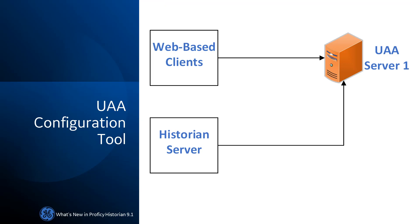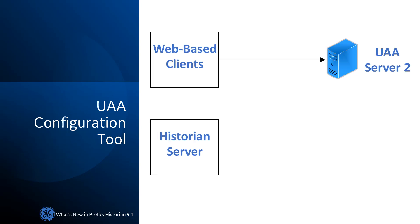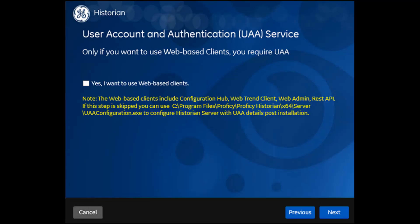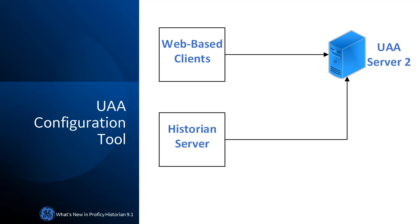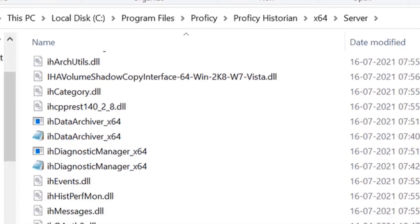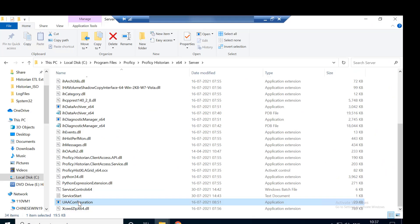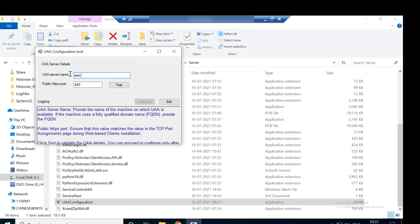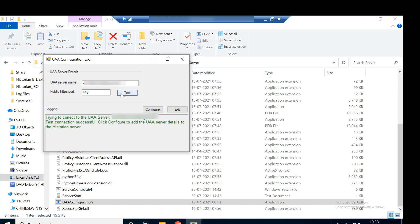UAA Configuration Tool. For you to access web-based clients, the Historian server and web-based clients must always point to the same UAA server. If, however, you have changed the UAA server used by web-based clients, or if you chose not to install web-based clients during Historian server installation but installed them later, you can now update the UAA server details for the Historian server without the need to reinstall it. To facilitate this enhancement, the UAA Configuration Tool has been introduced. Using this tool, you can provide the UAA server details that you provided during the installation of web-based clients.